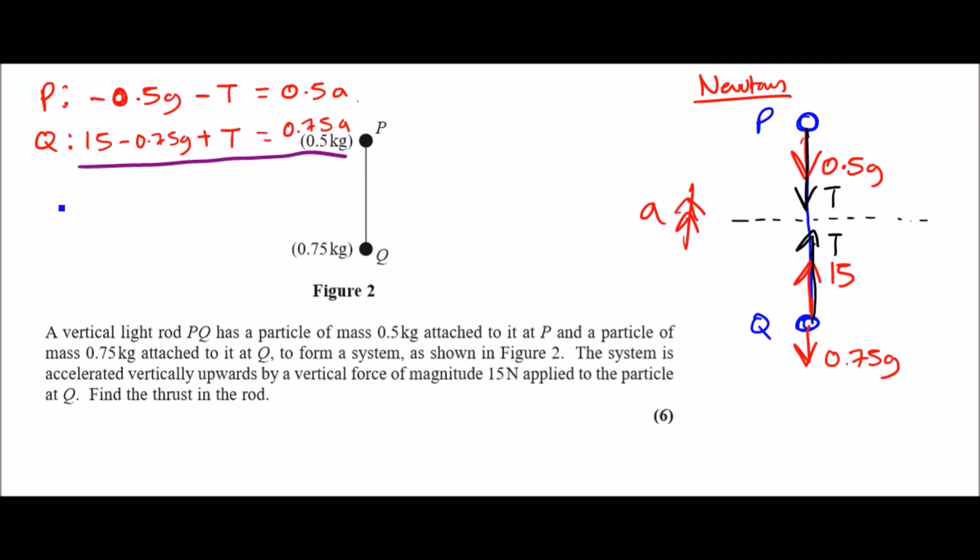To do that, we could just add these forces because minus T plus T cancels and becomes zero. So let's go ahead and add these. So 15 minus 0.5g minus 0.75g, so that's 1.25g gravitational force.